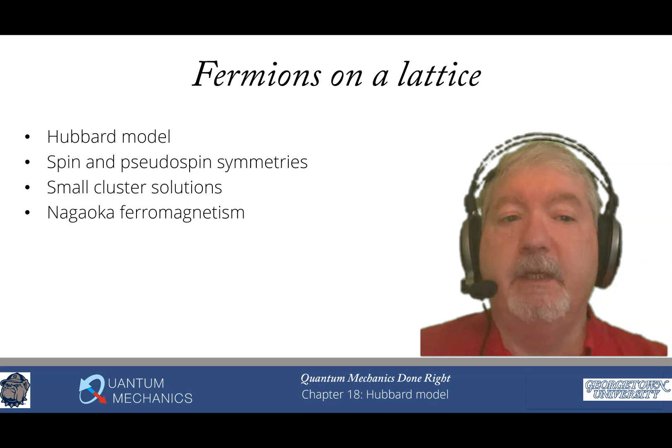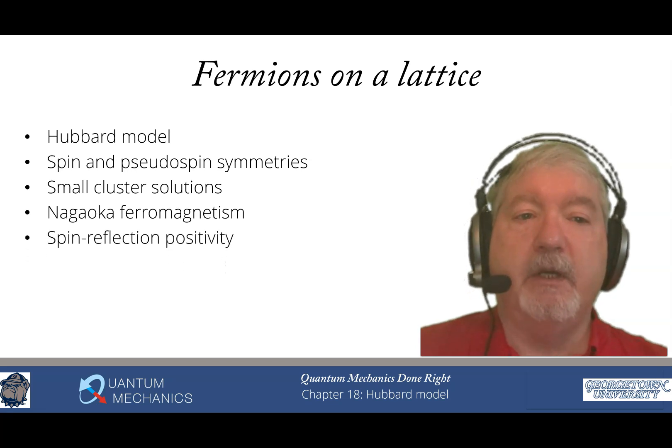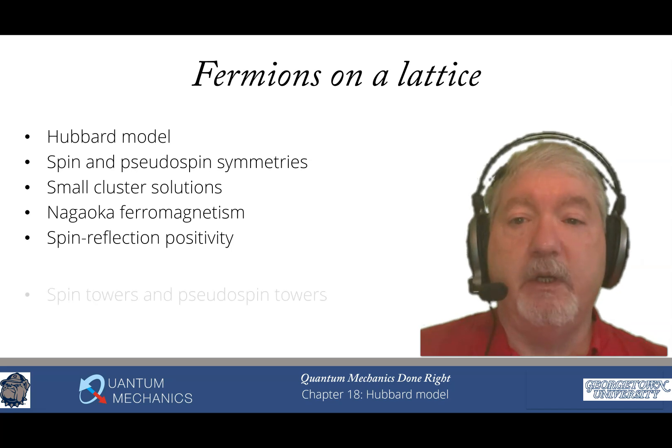Next, we have a theorem that says when you take a half-filled band—meaning on average every lattice site has one electron—if you remove one electron and the interactions are very strong, then the system must transition into a ferromagnetic state. It's proven with the Perron-Frobenius theorem. Then we talk about spin reflection positivity, a result Elliott Lieb figured out while working on the Hubbard model, leading to two theorems he proved in 1989 that were very influential and important.